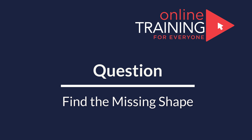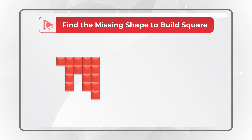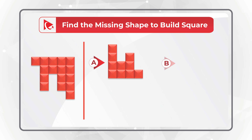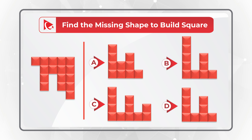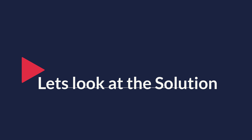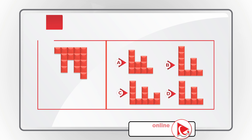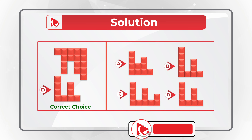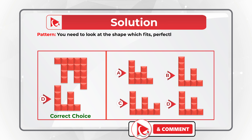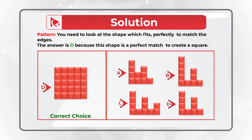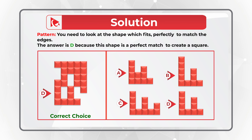Here's a very interesting question to test your spatial reasoning. You're presented with a partial square and you need to find the missing shape to build the full square, choosing from four options. The correct choice is D — it's a 5-by-5 square where Choice D is the perfect shape that matches perfectly to complete the full square.